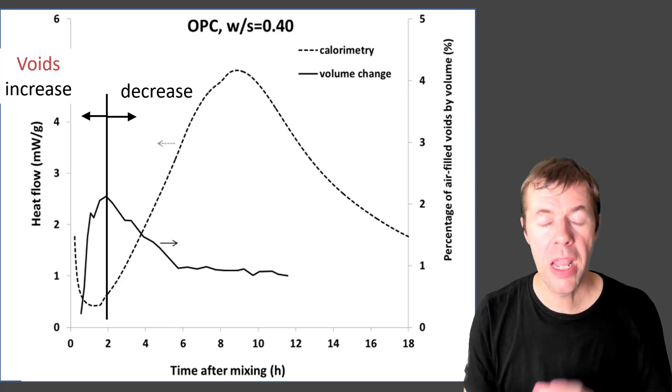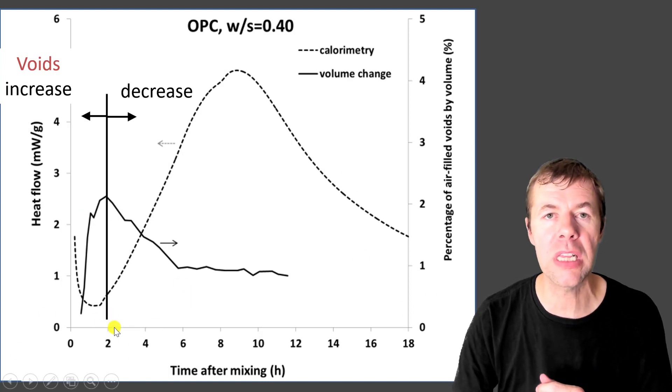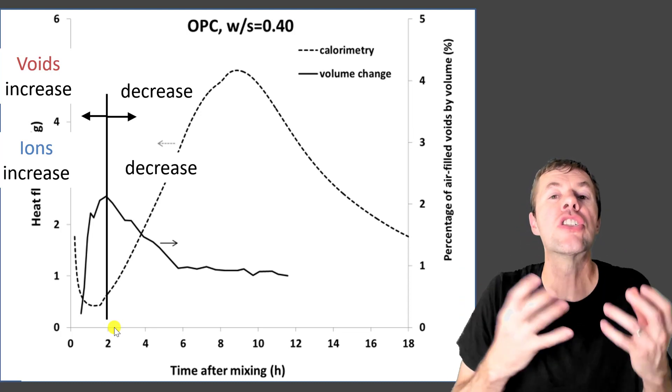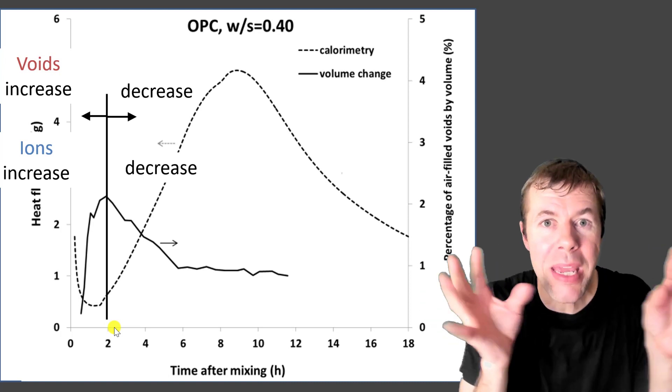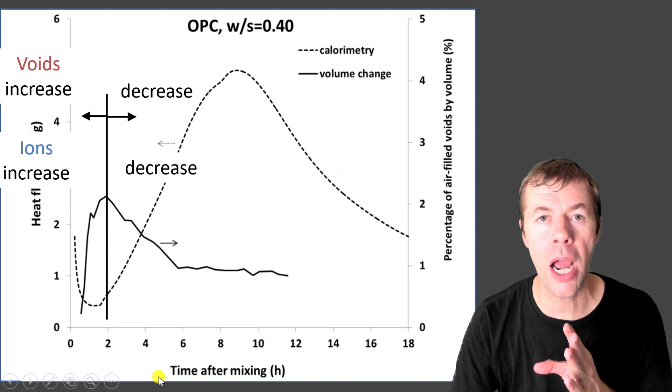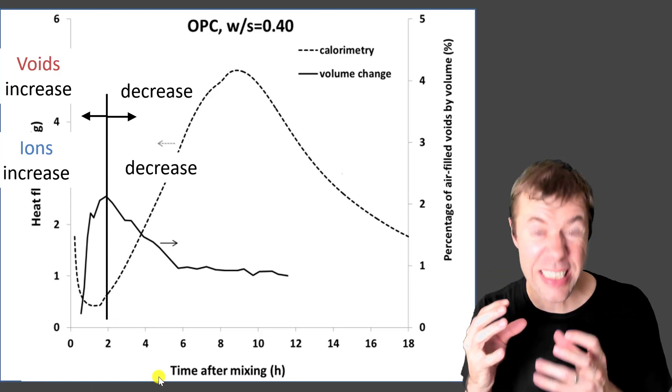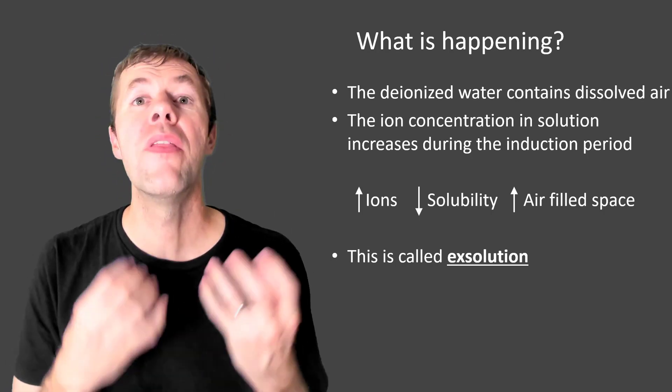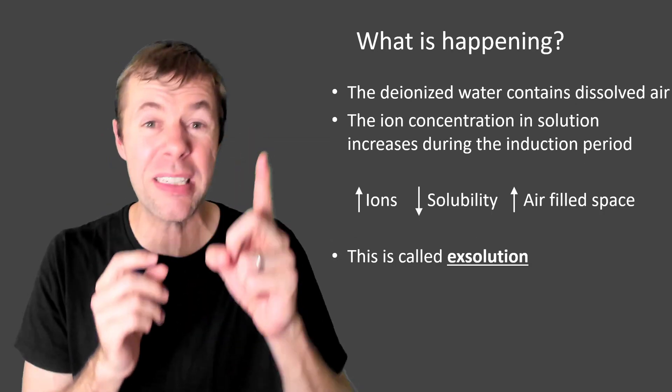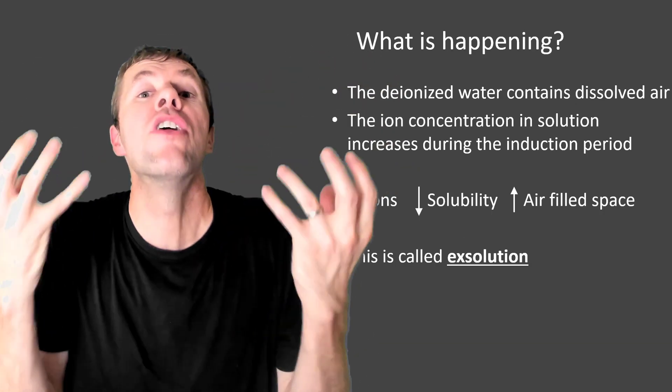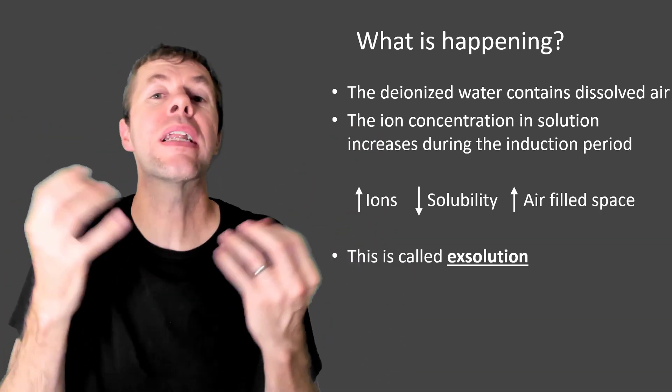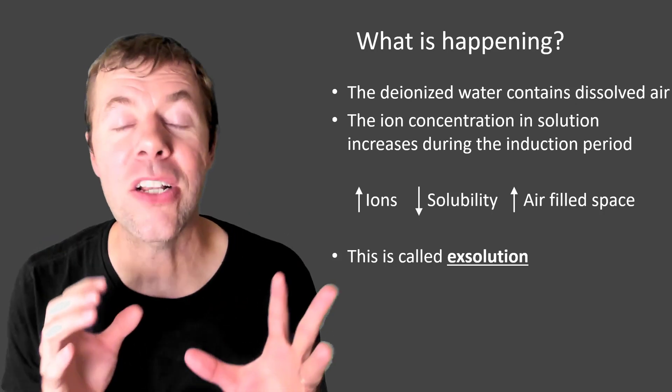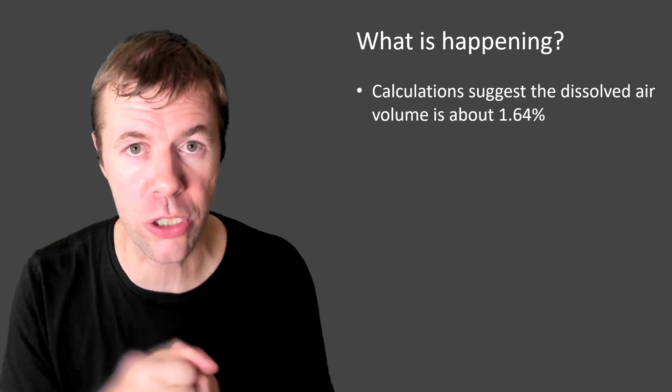I showed you this curve before. This is where we showed the voids went up, then they went down, and it seems to line up with a calorimetry curve. Well, to the left of this line, ions are increasing. That means things are dissolving. That means more and more things are swimming around in the water. And then after this magical two-hour time period, when heat starts to go up, the ions are decreasing. I think that's a killer clue. The water is going to contain some of this dissolved air. The ion concentration in solution is going to increase during this first period. That means as the ions go up and they start to swim around in the water, that water can't hold as much air. So the air gets less soluble. That means more air bubbles form. And this, ladies and gentlemen, is a thing in science called exolution.